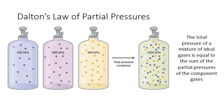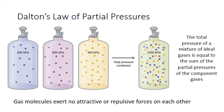The kinetic molecular theory also explains Dalton's law of partial pressures, which states that the total pressure of a mixture of ideal gases is equal to the sum of the partial pressures of the component gases. As kinetic molecular theory states, ideal gases do not interact with each other. And what this means is that at a constant temperature, volume, and amount, they will exert the same pressure on the container whether they are individual gases or combined in one container.